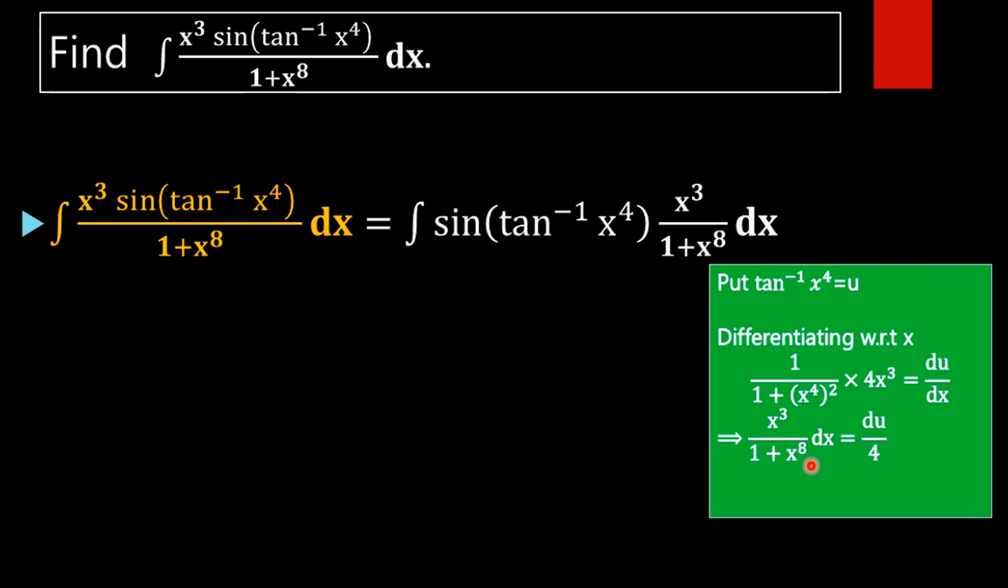So if we choose tan inverse of x raised to 4 as u, then we will get this function as du. That's why we are taking tan inverse of x raised to 4 as u.